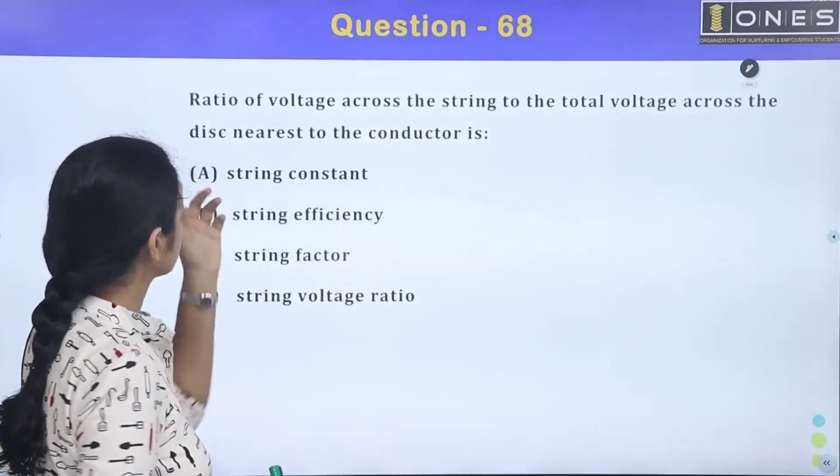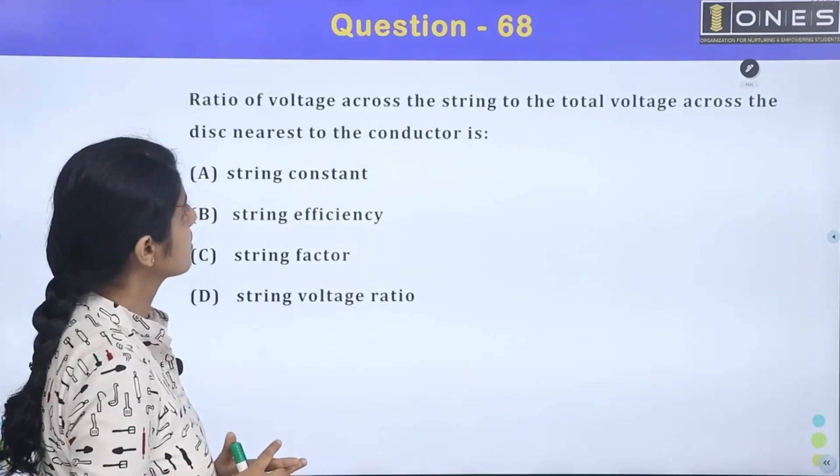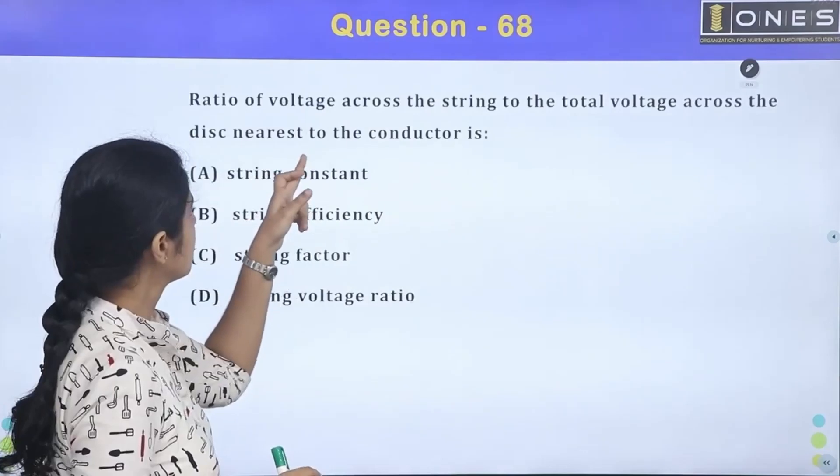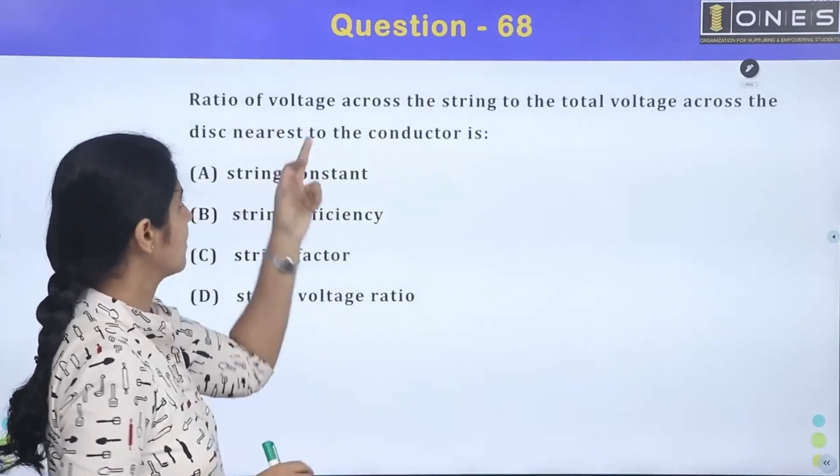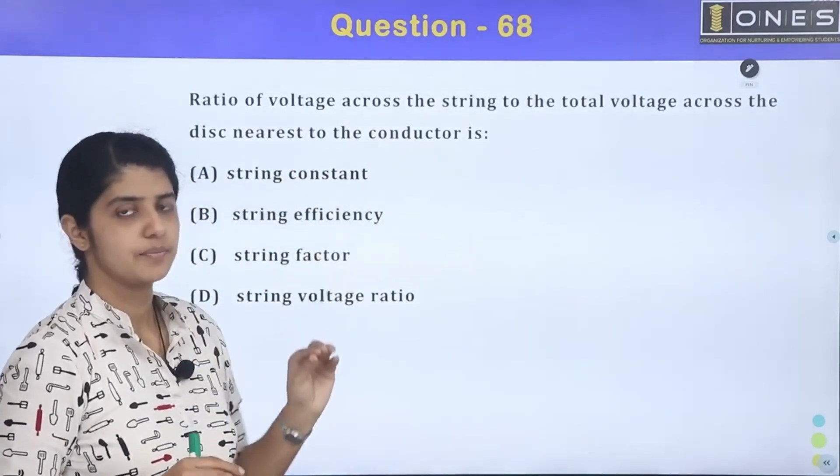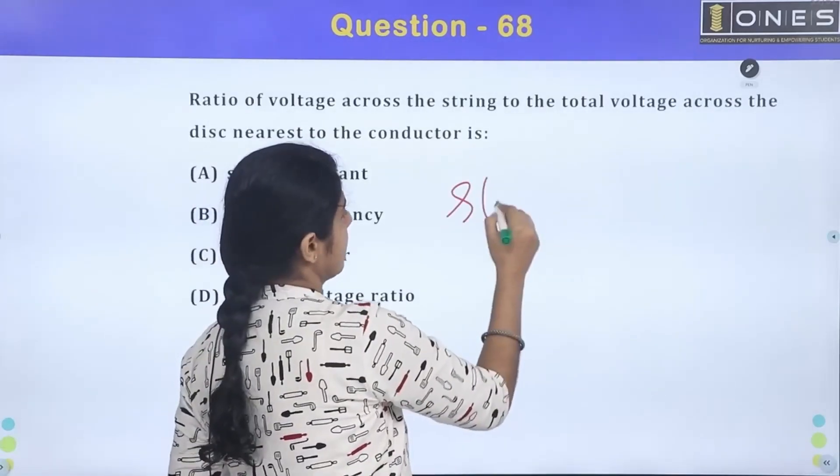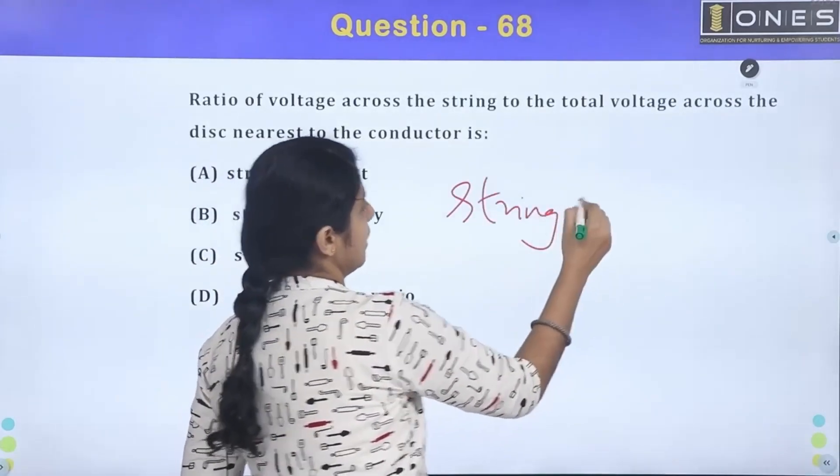Next question: ratio of voltage across the string to total voltage across the disk nearest to the conductor. So what this question is asking - it doesn't have a clear meaning. There is string efficiency here, isn't it? String efficiency.